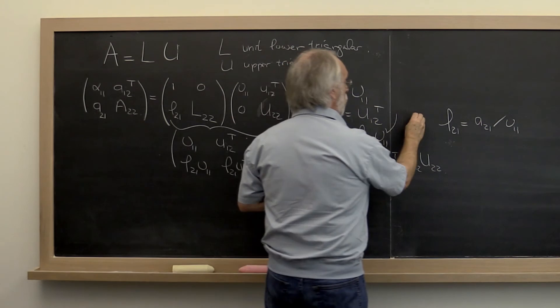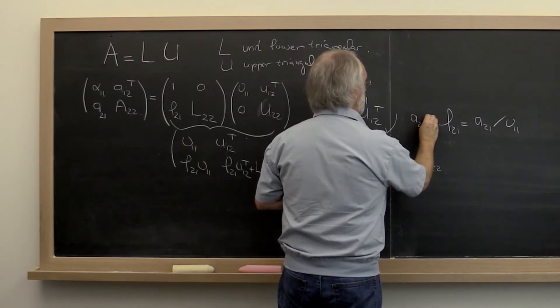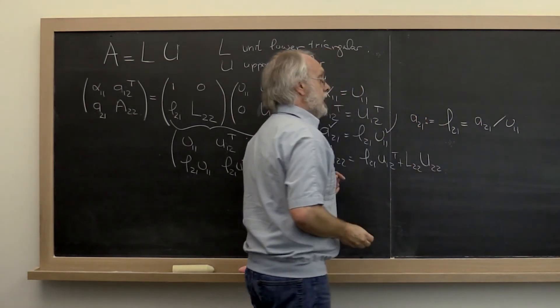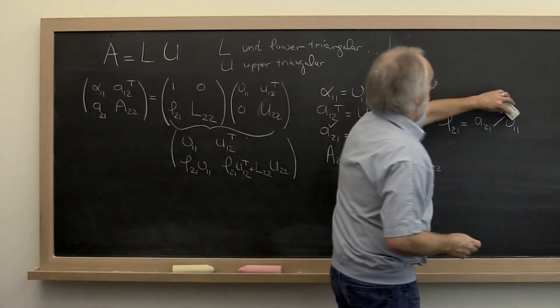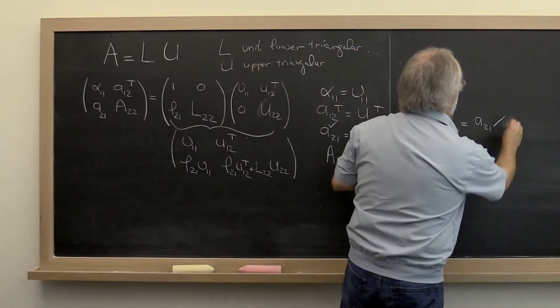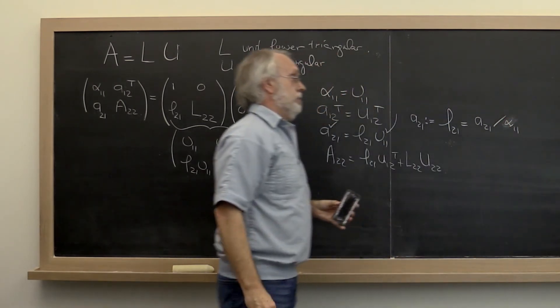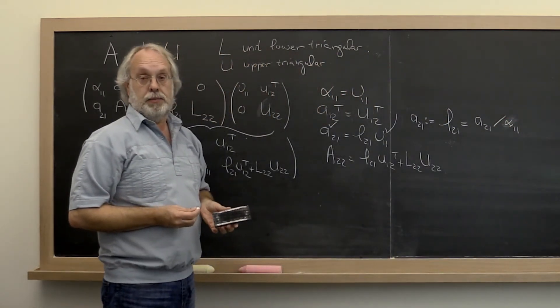However, we would like to overwrite A 2 1 with that. And we recognize that upsilon 1 1 is now stored in alpha 1 1. And we get that update.